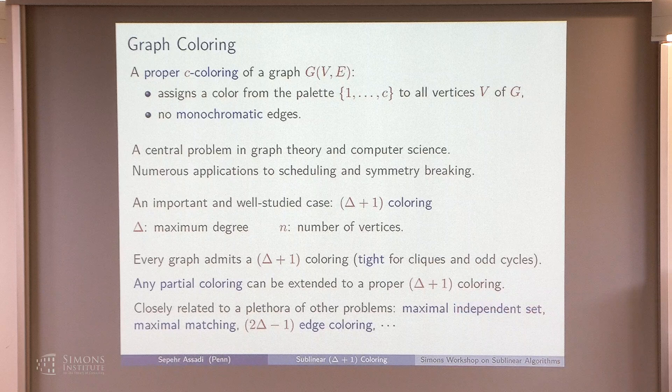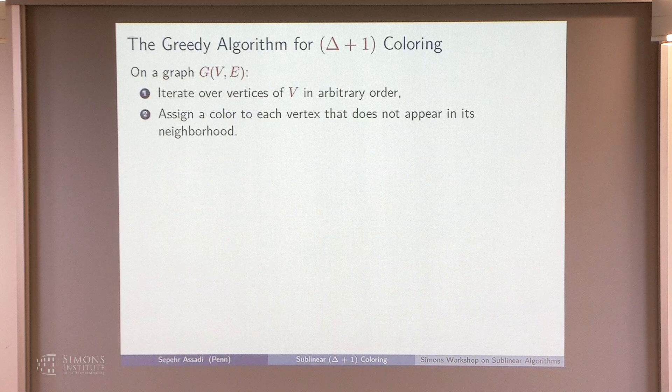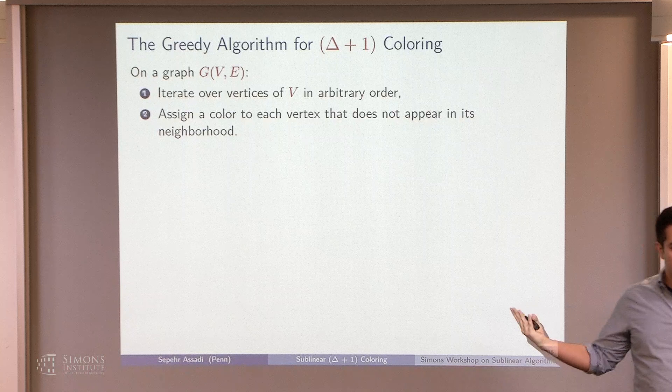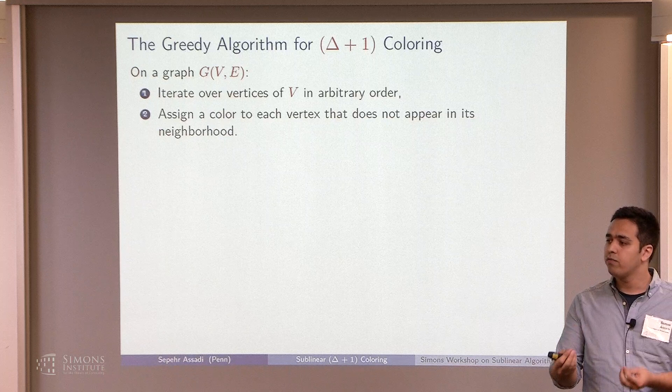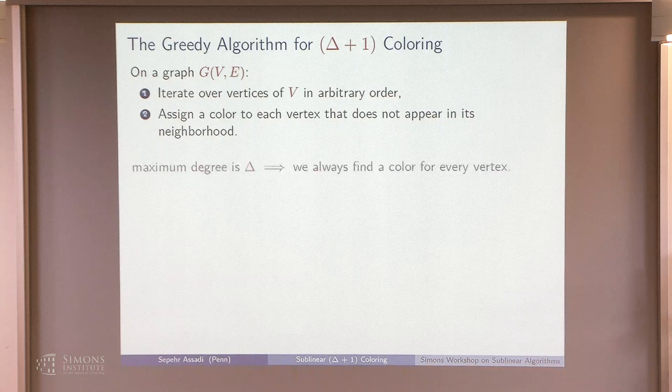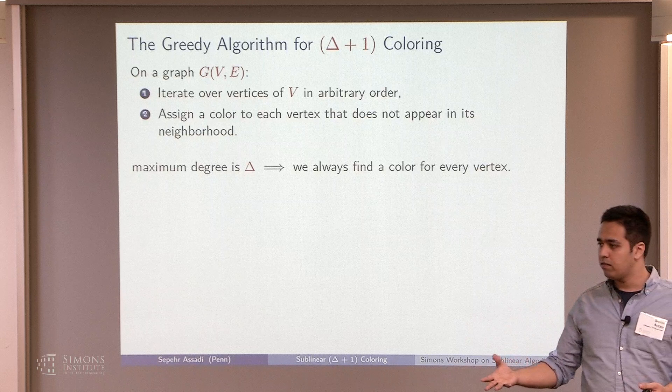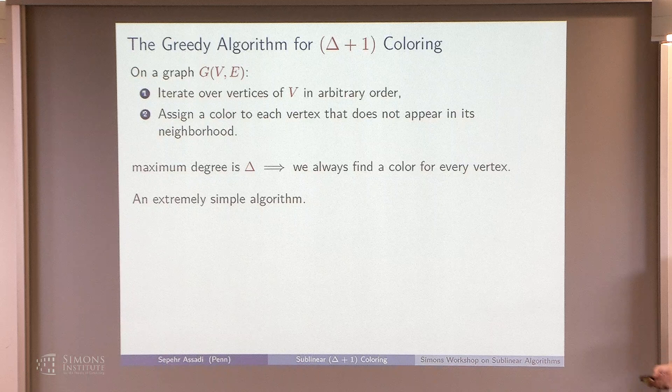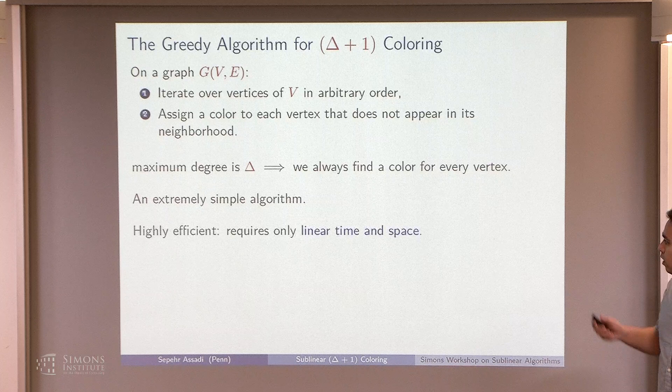This problem is related to other fundamental problems such as maximal independent set, maximal matching, and edge coloring with 2delta minus one edge colors. There is a very simple sequential algorithm that solves this: iterate over your vertices, and for each vertex pick a color not appearing in its neighborhood. Since maximum degree is delta and you have delta plus one colors, you always find a color. This requires linear time and space.